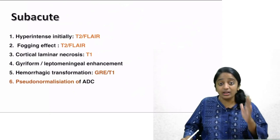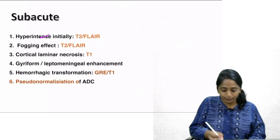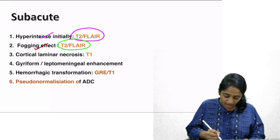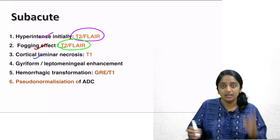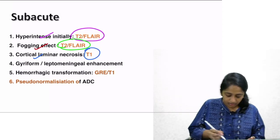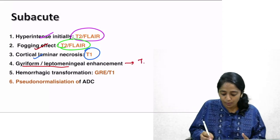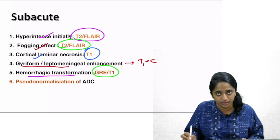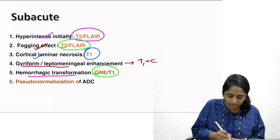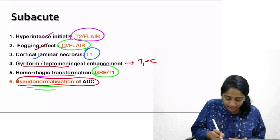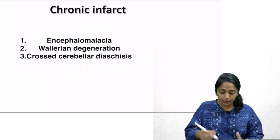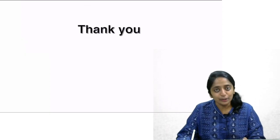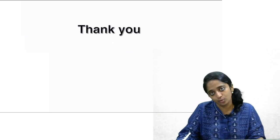To summarize: in subacute infarct — T2 and FLAIR show initial hyperintensity followed by fogging effect; T1 shows cortical laminar necrosis due to lipid-laden macrophages; post-contrast shows gyriform and leptomeningeal enhancement; GRE and T1 can both depict hemorrhagic transformation. An important concept is pseudo-normalization of ADC. In chronic infarct: encephalomalacia, Wallerian degeneration, and crossed cerebellar diaschisis. Thank you for listening — stay tuned for the next lecture continuing stroke imaging.